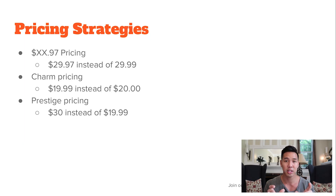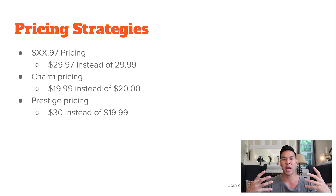And lastly, if my item is perceived to be higher quality and I want to really brand it as a premier item, I'll end it in .00. There are studies on this called prestige pricing. Ending in a whole number makes it feel more exclusive and expensive, because the psychology of .99 feels a lot cheaper than the double zeros. Each one of these may work for you, but you never know until you start testing.